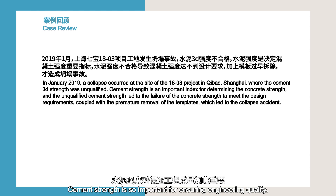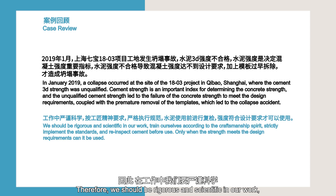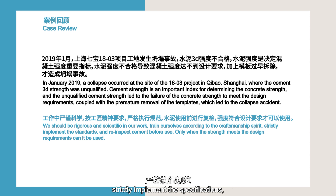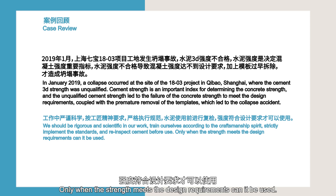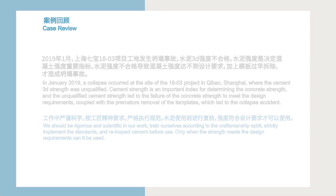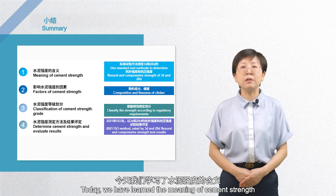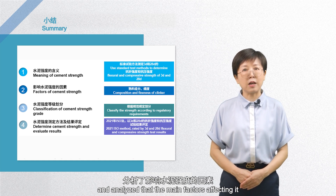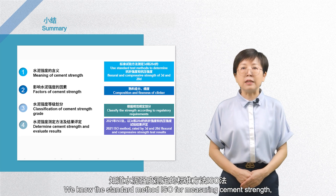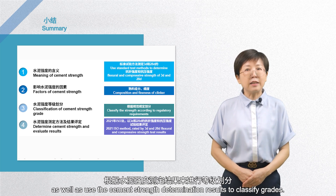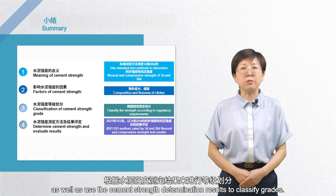After learning the relevant knowledge of cement strength, let's review the previous case. Cement strength is so important for ensuring engineering quality. Therefore, we should be rigorous and scientific in our work. Train ourselves according to the craftsmanship spirit, strictly implement the specification, and re-inspect cement before use. Only when the strength meets the design requirements can it be used. Today, we have learned the meaning of cement strength and analyzed that the main factors affecting it are cement components and fineness. We know the standard ISO method for measuring cement strength, the determination of cement strength results, as well as how to use the cement strength determination results to classify grades.